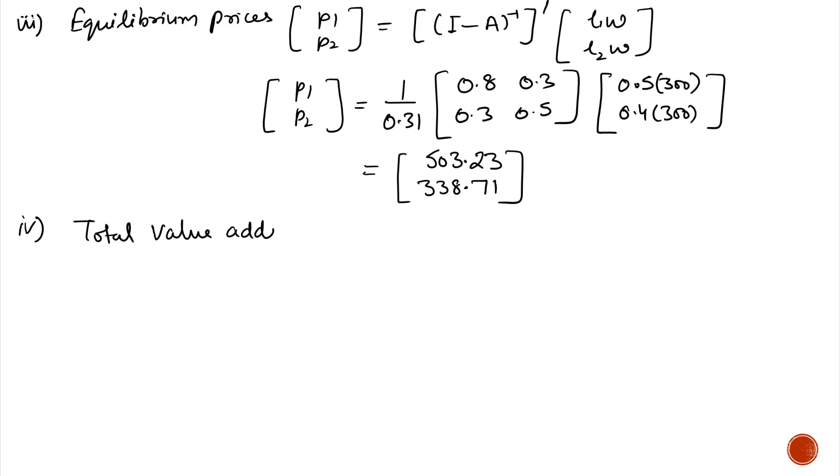Now, total value added, which equals the transpose of gross output multiplied by L1W, L2W. Gross output is 58.06 and 46.77, and put the value of L1, L2, 0.5, 0.4, and W 300. After calculation, we will get total value added 14321.4. Thank you.